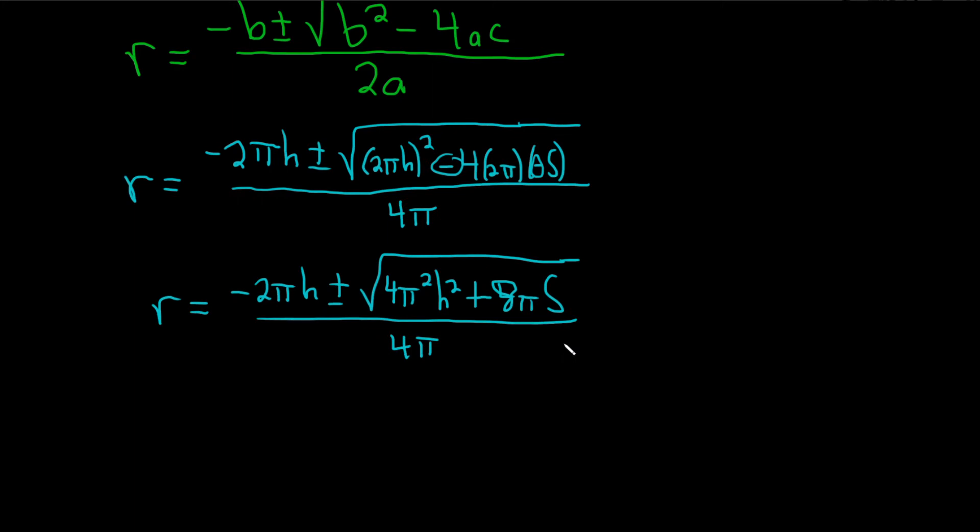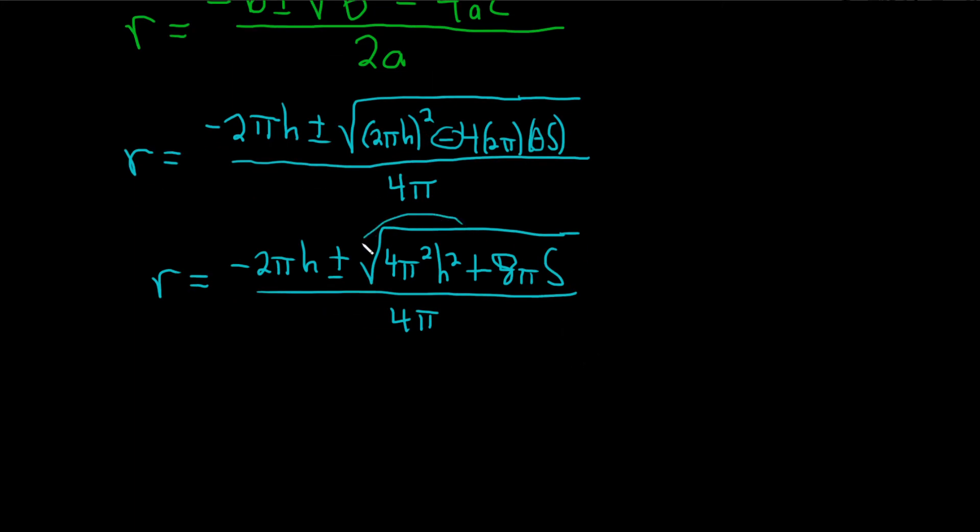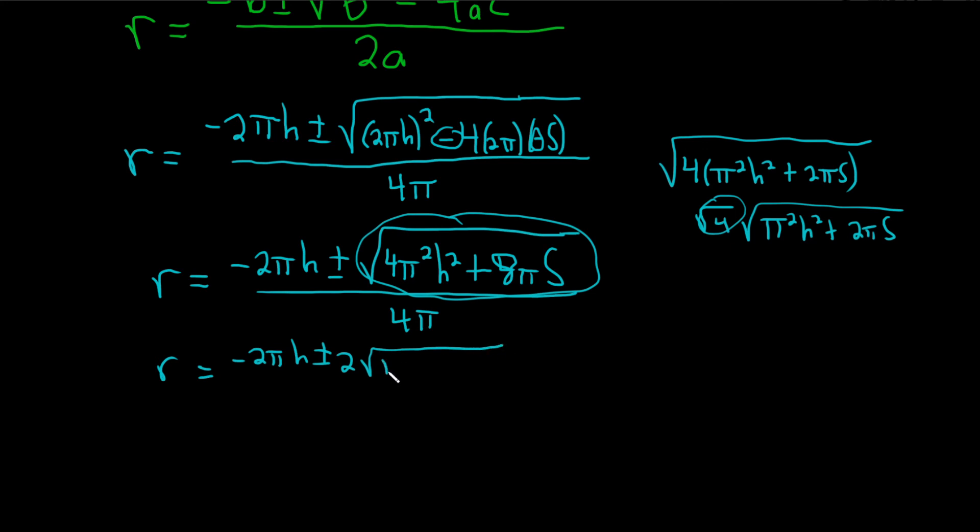We can actually do some simplification here. What you could do is you could factor out a 4 like this: 4(π²h² + 2πs). Then you can break this up into two square roots: square root of 4, square root of π²h² plus 2πs. The square root of 4 is 2. So this is actually negative 2πh plus or minus 2 square root of π²h² plus 2πs.